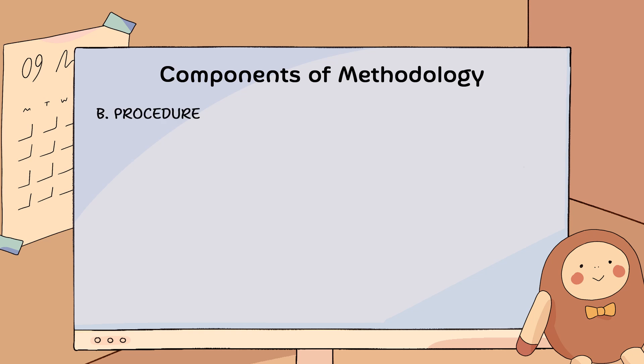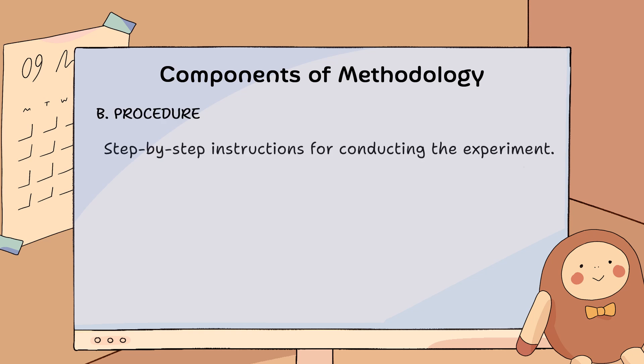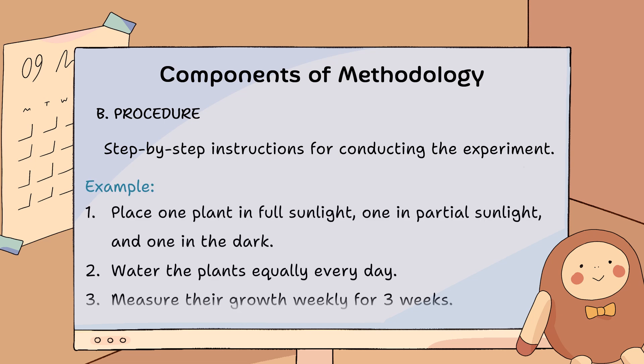Procedure: this is the step-by-step instructions for conducting the experiment. For example: one, place one plant in full sunlight, one in partial sunlight, and one in the dark; two, water the plants equally every day; three, measure their growth weekly for three weeks.